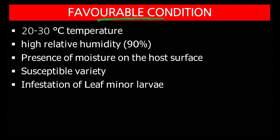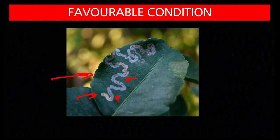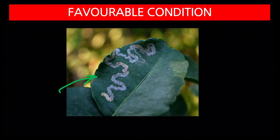Favorable conditions for citrus canker include temperature of 22–30°C, high relative humidity, presence of moisture on the host surface, susceptible variety, and infestation of leaf miner larvae. Leaf miner infection significantly increases the severity of the disease.